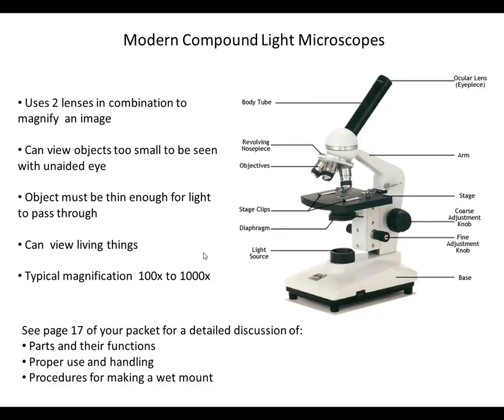One nice thing about compound light microscopes is we can view living things. If we took a sample of pond water from our pond in the courtyard, we could put that under the compound light microscope and see different kinds of microorganisms called protists — organisms like the amoeba or the paramecium. Typical magnification is between 100 and 1000 times. Our class microscopes have 40x scanning, 100x low power, and 400x high power total magnification.